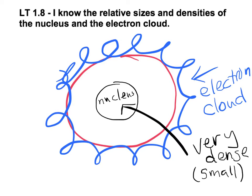On the other hand, the electron cloud is big. It takes up a lot of space, but it's not very dense at all. It's a lot of open space.